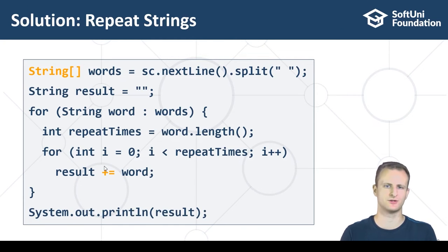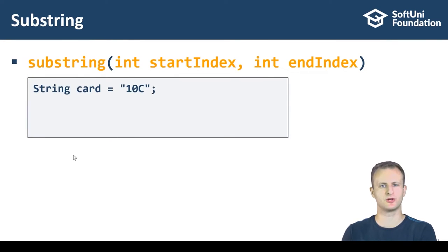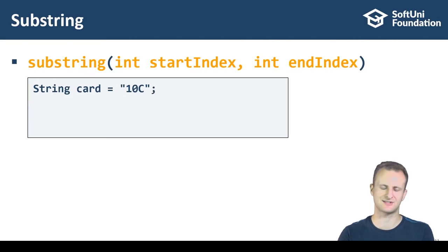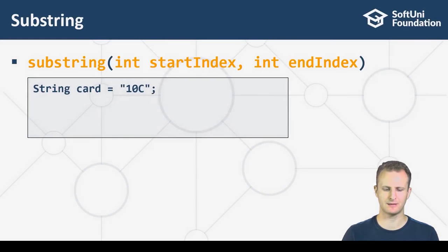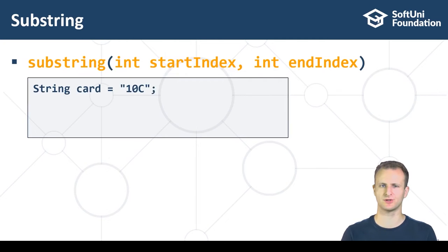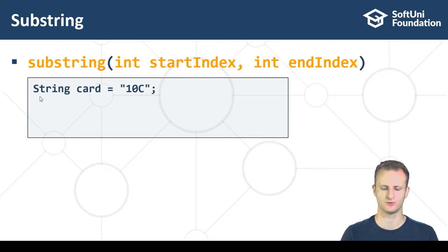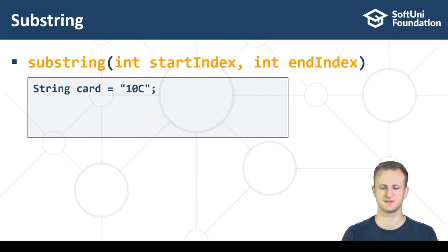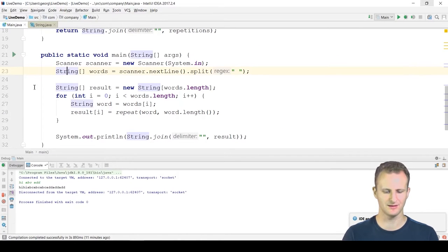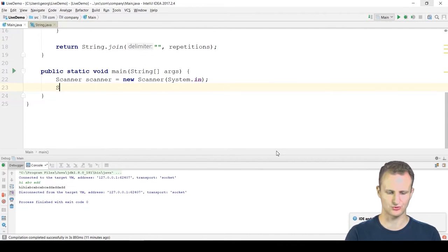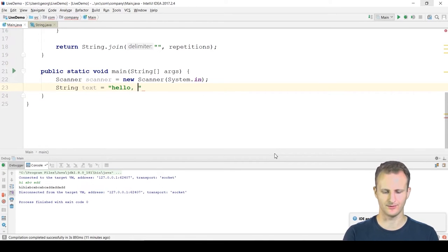Up until now we've been talking about creating new strings from existing strings through concatenation. After this break we're going to talk about how we can access parts of a string's data. One common operation in text processing is getting a substring. Let's open IntelliJ — say we have the string 'hello what's up'.